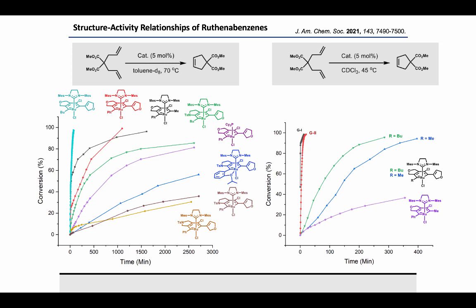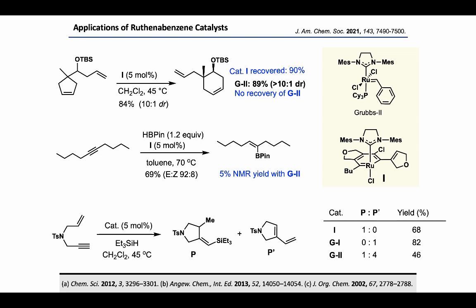Some of the most active complexes were selected and their reactivity compared with standard metathesis catalysts like Grubbs 1 and Grubbs 2 at a lower temperature of 45°C. Due to their aromatic nature, their reactivity was obviously slower than the standard metathesis catalysts. Certain applications were demonstrated, including activity in the ring rearrangement metathesis reaction, where the corresponding product was isolated in high yield and diastereoselectivity, similar to Grubbs 2. This reaction had the added advantage of 90% catalyst recoverability, while no recoverability was observed for Grubbs 2. Trans-hydroboration of 5-decyne was also demonstrated, forming an alkenylboronate with high yield and stereoselectivity, although Grubbs 2 cannot perform this reaction efficiently.